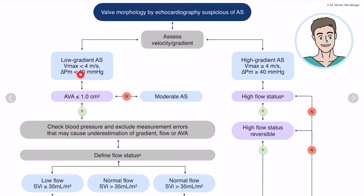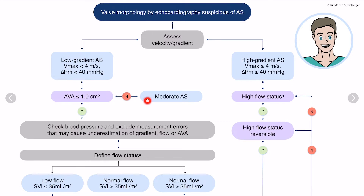So if all the measurements fit — the gradient is below 40 and the aortic valve area is 1.2 square centimeters, for example — it is really a true moderate aortic stenosis. If it is below one square centimeter, we have to check the blood pressure.